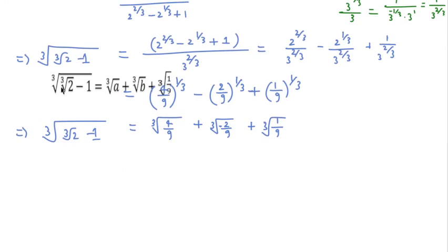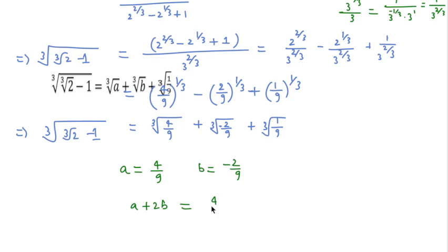Comparing with the given expression, cube root of a corresponds to cube root of 4/9, so a equals 4/9. And b equals minus 2/9. Therefore a plus 2b equals 4/9 plus 2 times (minus 2/9), which is 4/9 minus 4/9, that is 0. So 0 is the right answer for this question. Thanks for watching this video, please like, share and subscribe to this channel.